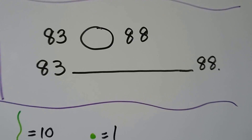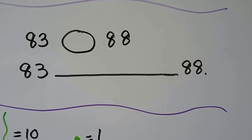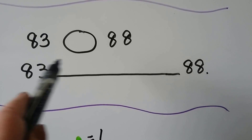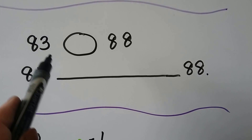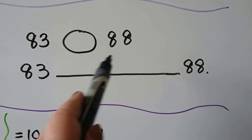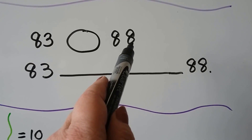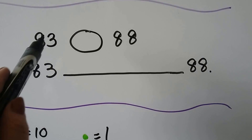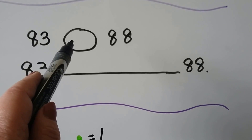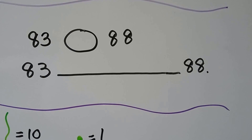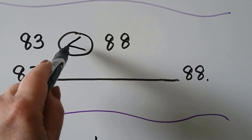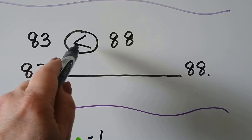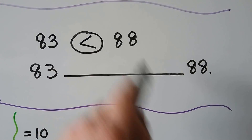Here we have 83 and 88. They have the same number of tens — they both have eight tens — so we compare the ones. 83 has three ones; 88 has eight ones. Is 83 less than, greater than, or equal to 88?